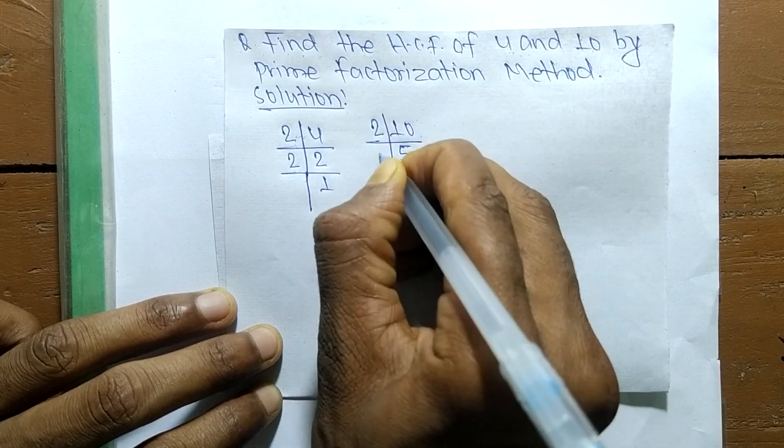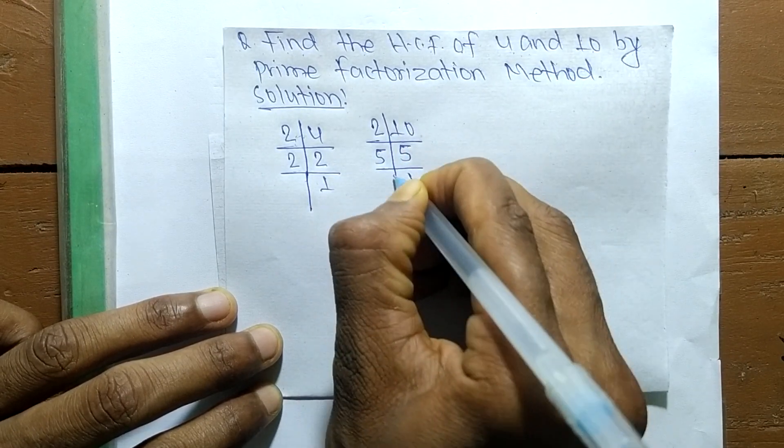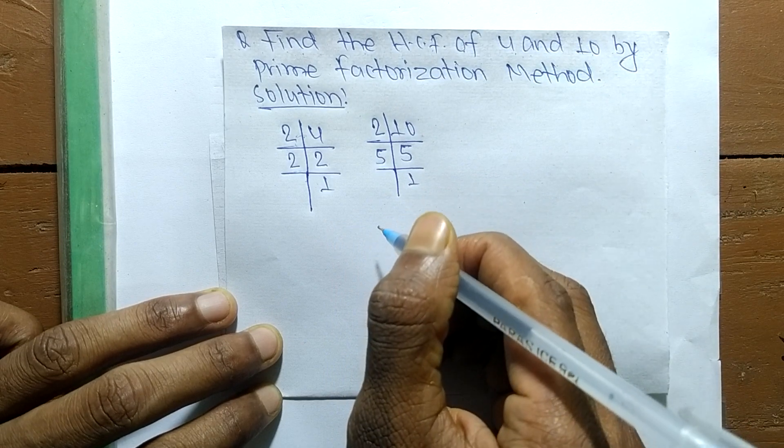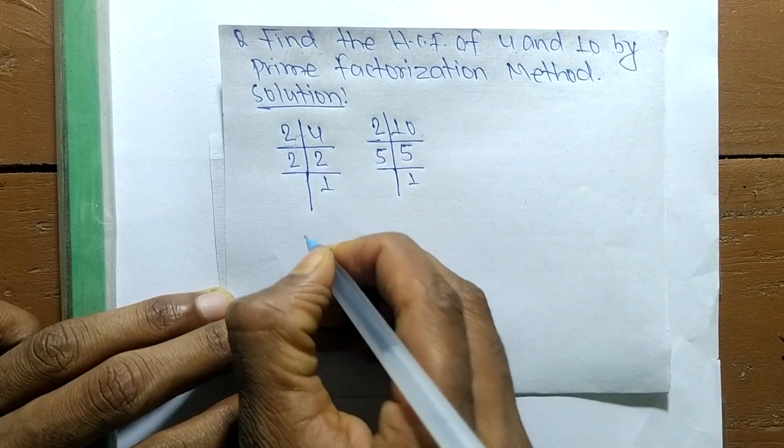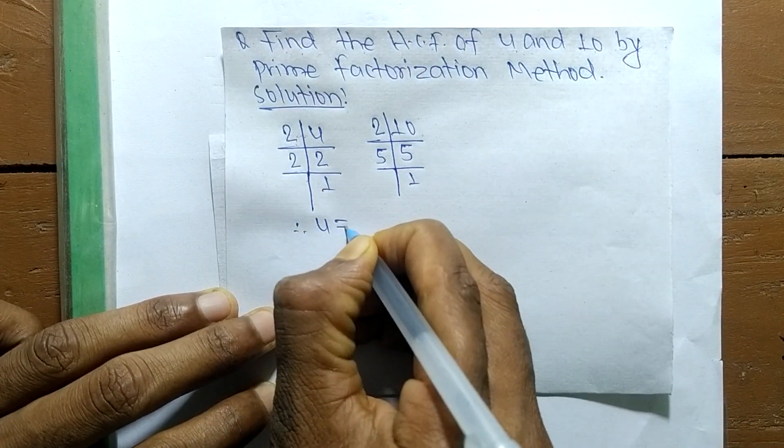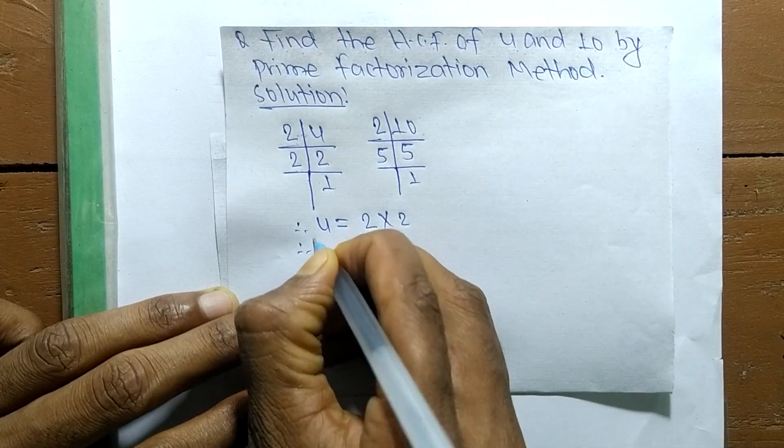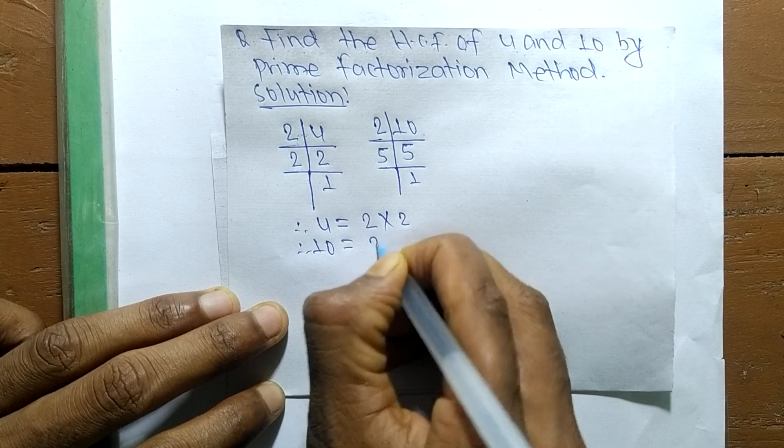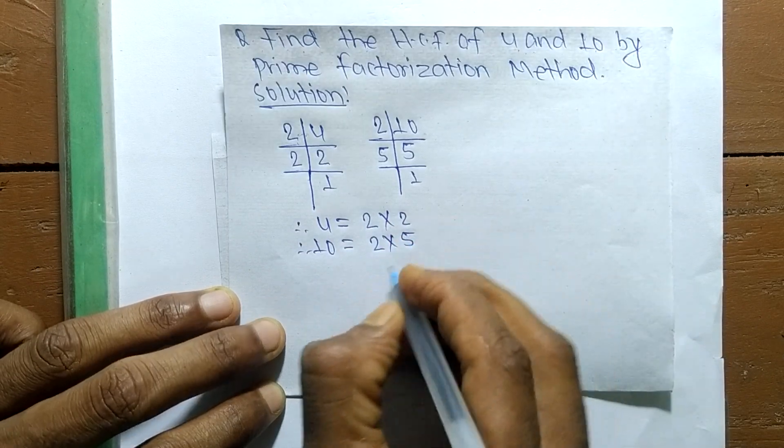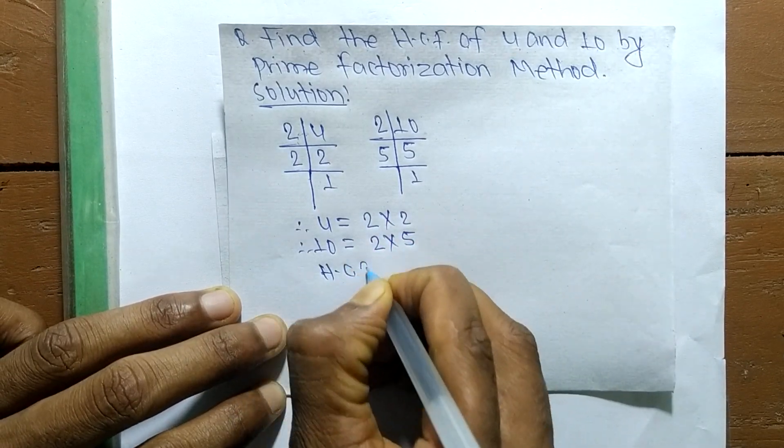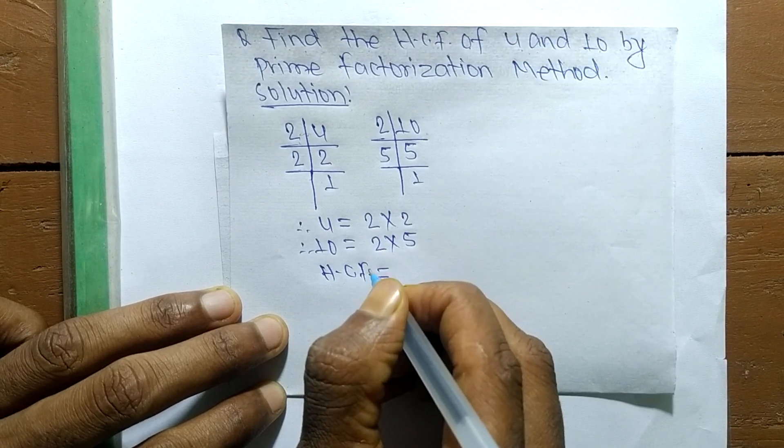And 5 times 1 equals 5. So from these prime factors we can write 4 is equal to 2 times 2, and 10 is equal to 2 times 5. So HCF is equal to...